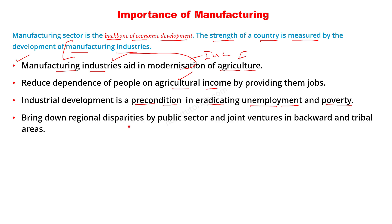Manufacturing sector regional disparities को भी कम करता है। Public sector के द्वारा और joint ventures के द्वारा इसे कम किया जा सकता है। Government वहाँ भी जाके roads बना सकती है जहाँ profit ना हो, hospitals और schools बनाती है दूर-दराज के इलाकों में। इस तरह regional disparities को खत्म किया जा सकता है manufacturing sector के जरिए।